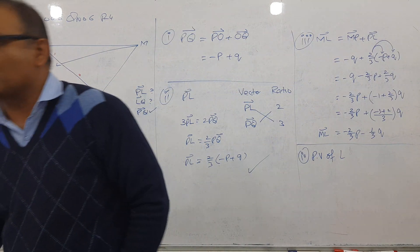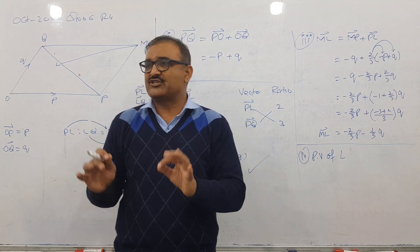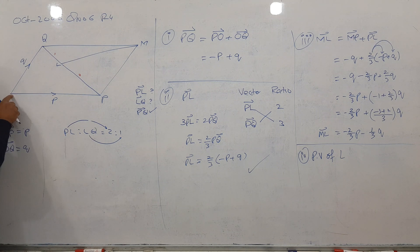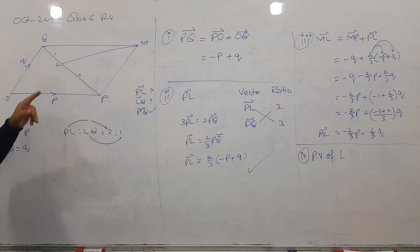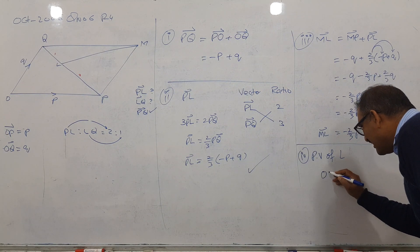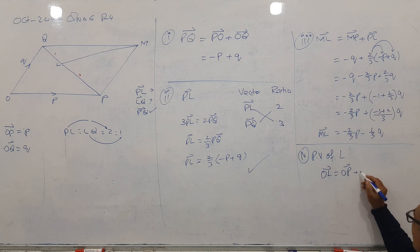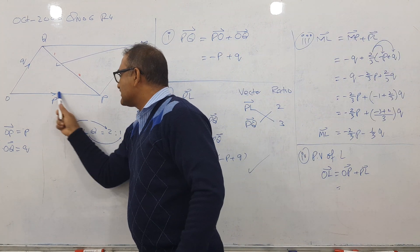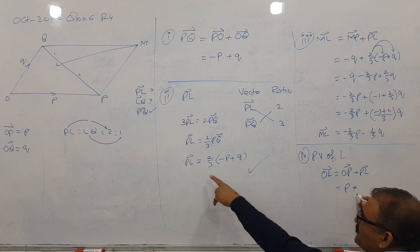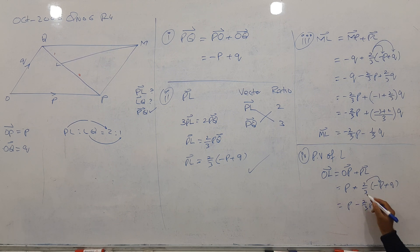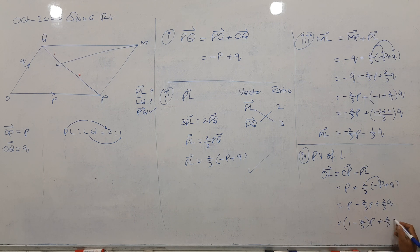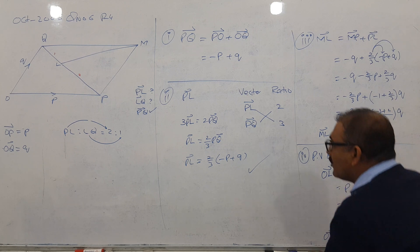For the last part, we need the position vector of L, which means starting from the origin O and reaching L. The suitable path is O to P, then P to L. So OL equals OP plus PL. OP is P, and PL is (2/3)(minus P plus Q). Expanding: P minus (2/3)P plus (2/3)Q. Combining the P terms: 1 minus 2/3 equals 1/3. So OL equals (1/3)P plus (2/3)Q. The question is finished.